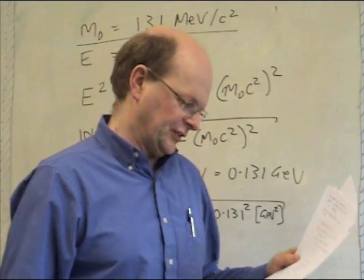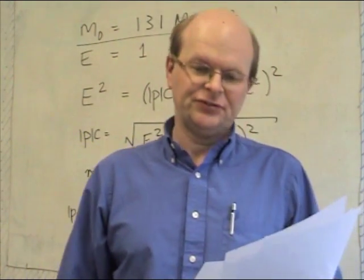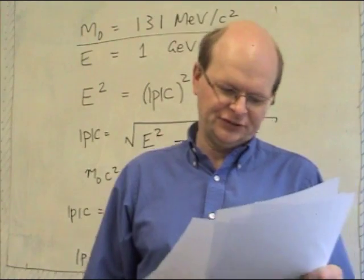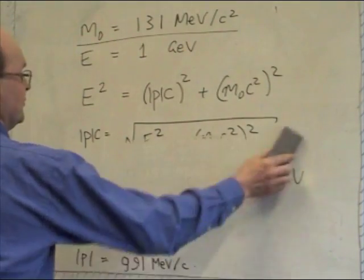Alright, so the next part of this question says, by how much is the particle of the pi meson's speed less than c, the speed of light, giving your answers in meters per second? Right, so let's clean off this stuff. We don't need this anymore.